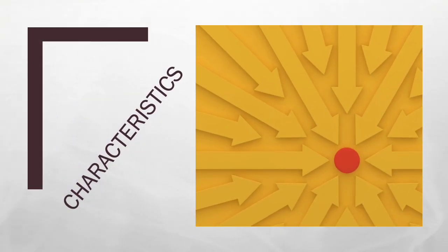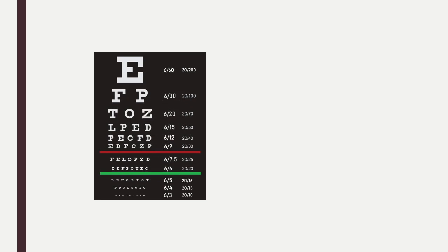Let's take a look at this vision chart. A person who is legally blind has vision of 20/200 or less — they would barely be able to see the large E from 20 feet away with corrected vision, meaning they're wearing glasses or have had eye surgery. To legally have low vision, a person would see from 20/70 or less with corrected vision, which is the T-O-Z line. A person who has 20/20 vision is at the green line.